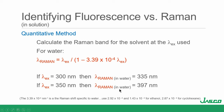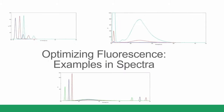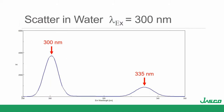Let's look at optimizing fluorescence in samples by looking at some example spectra. Starting with just the blank — just water. If I excite at 300 nm, this is a water scan. This big band at 300 nanometers is Rayleigh scatter — wherever I excite is Rayleigh. I should also see a second order Rayleigh band at 600 nm.